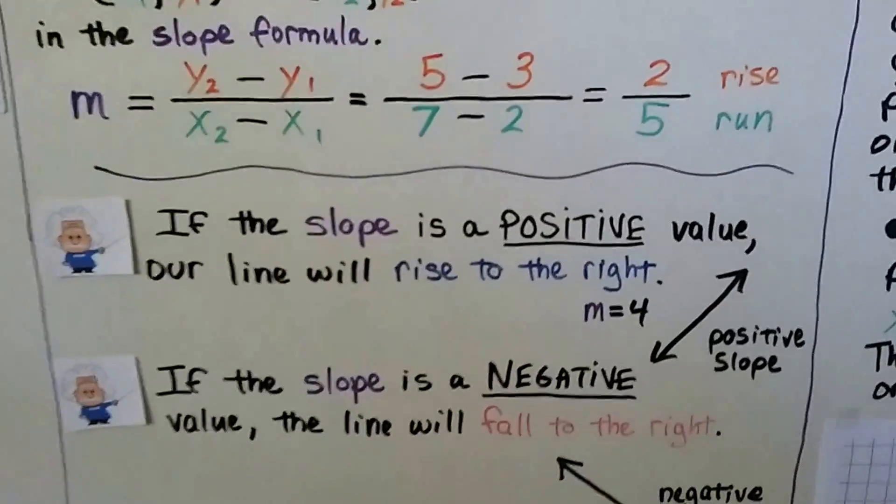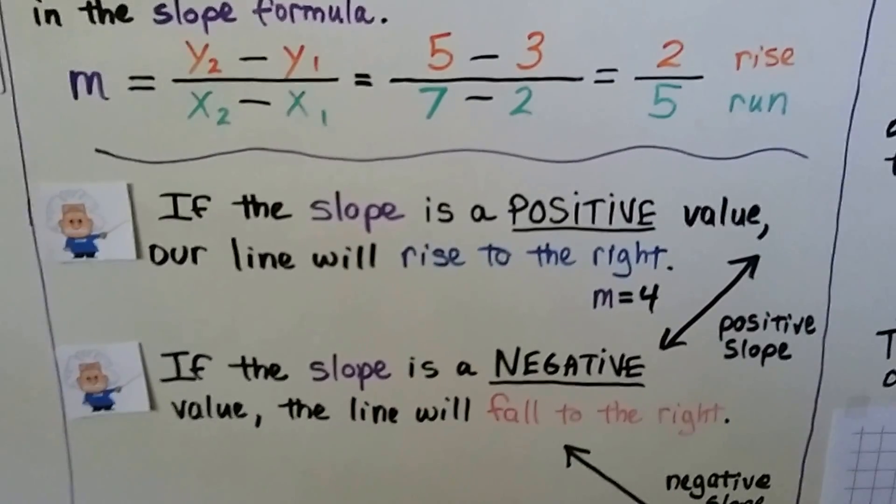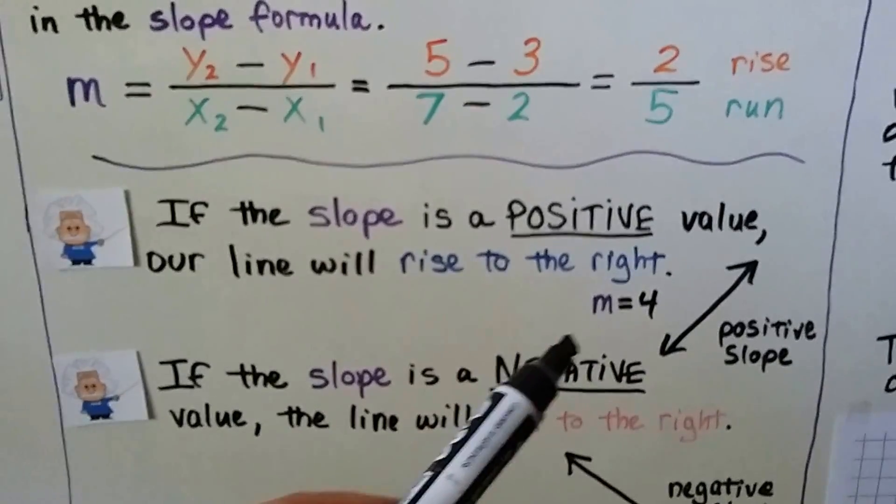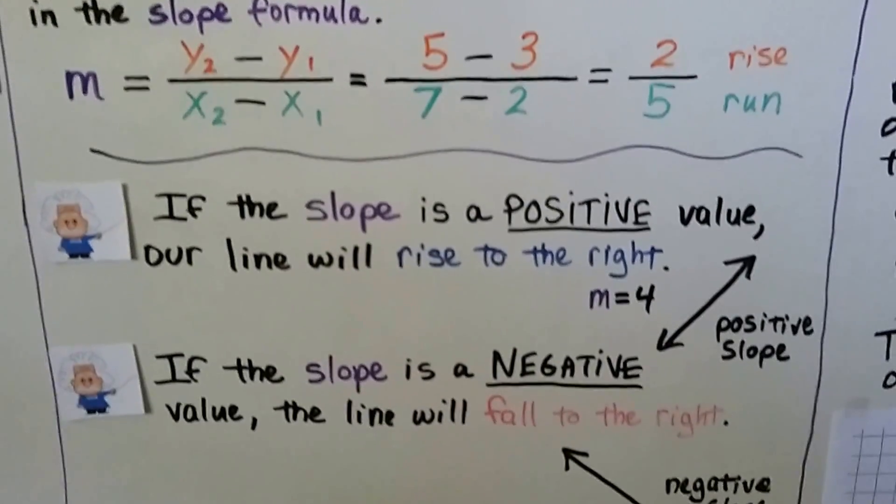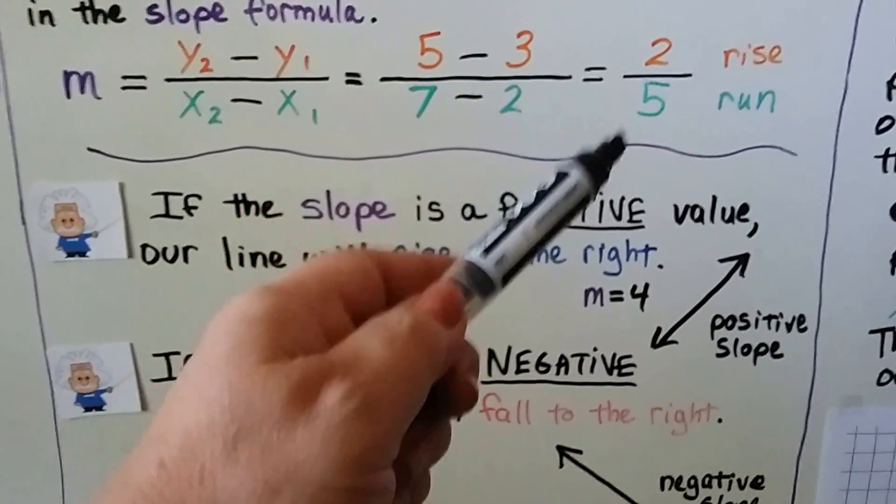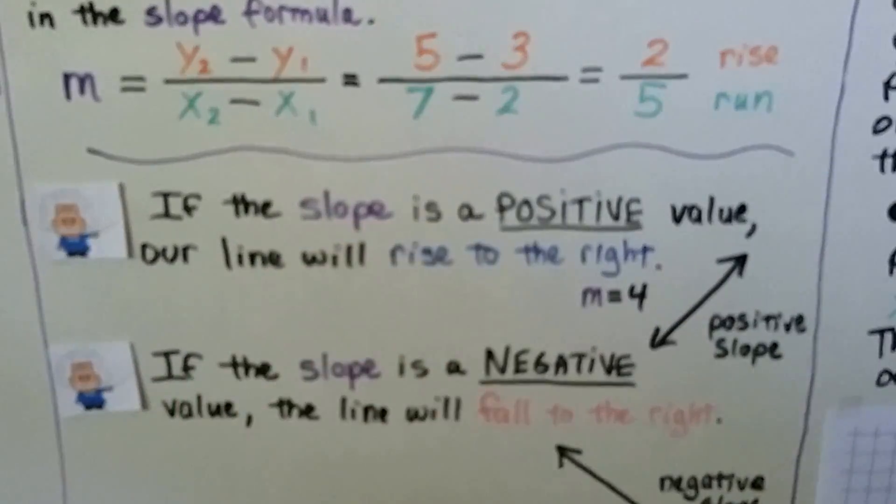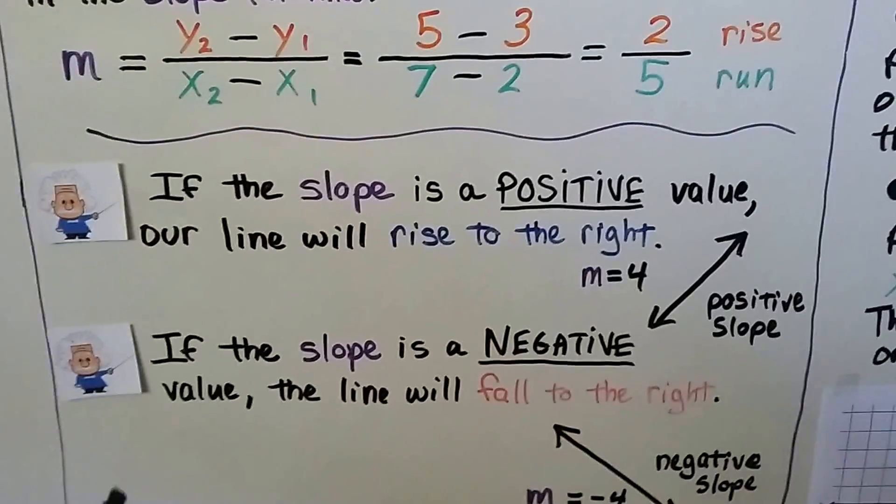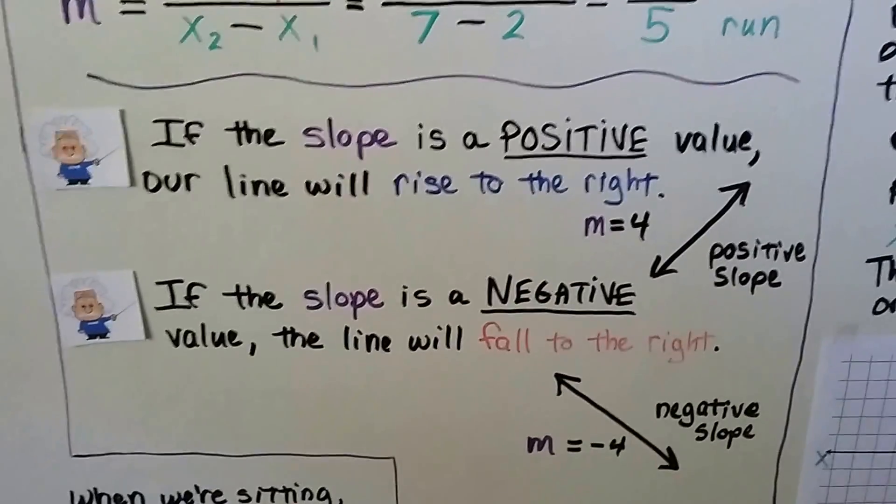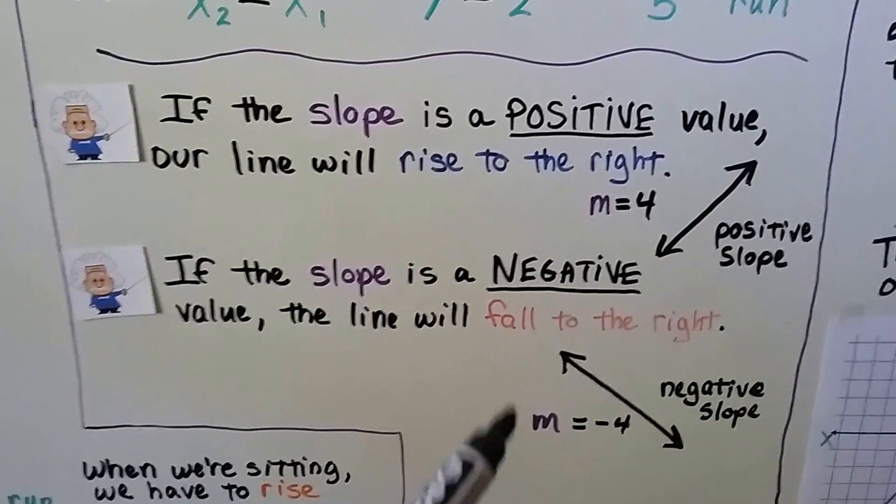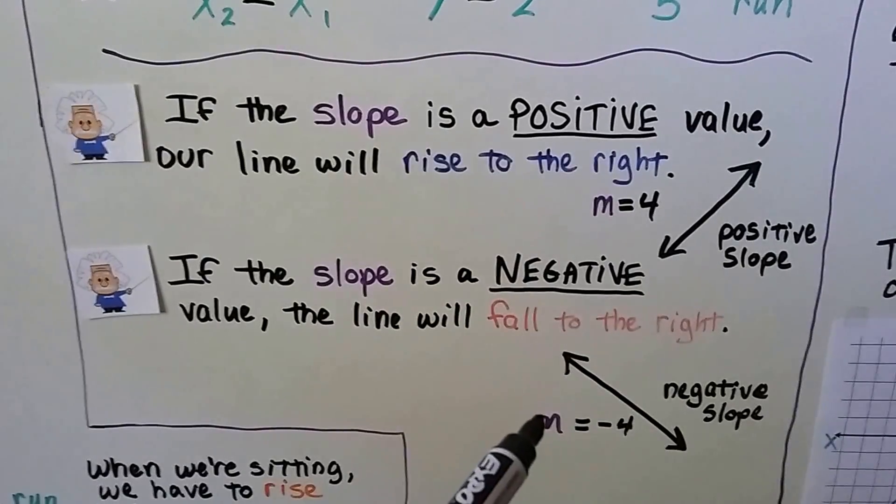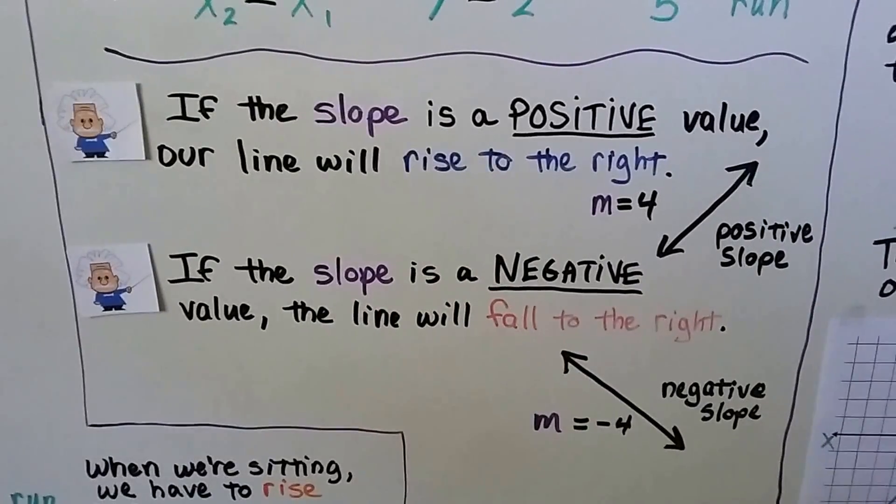If the slope is a positive value, our line will rise to the right. Our slope would be like a positive 4. Even this is positive. Even though it's a fraction, 2 fifths, it's still a positive. If the slope is negative, it's a negative value, the line will fall to the right. So we would have a negative slope. So it'd be like m equals negative 4.